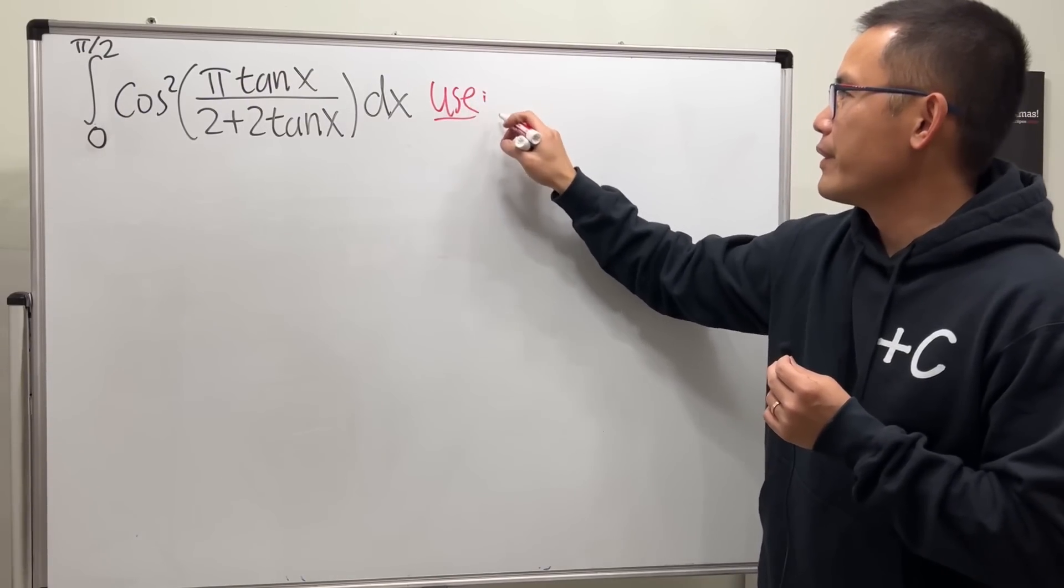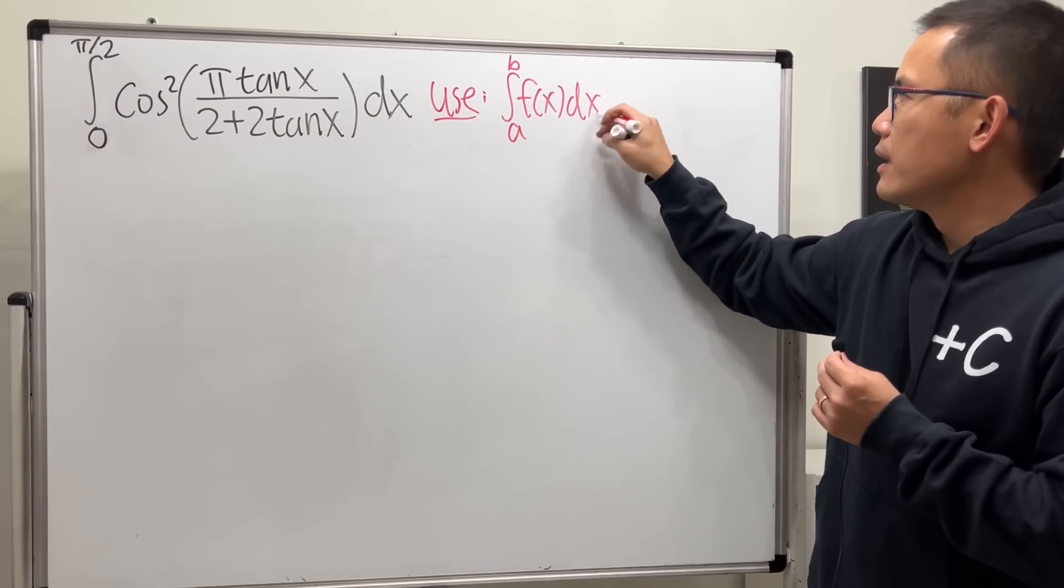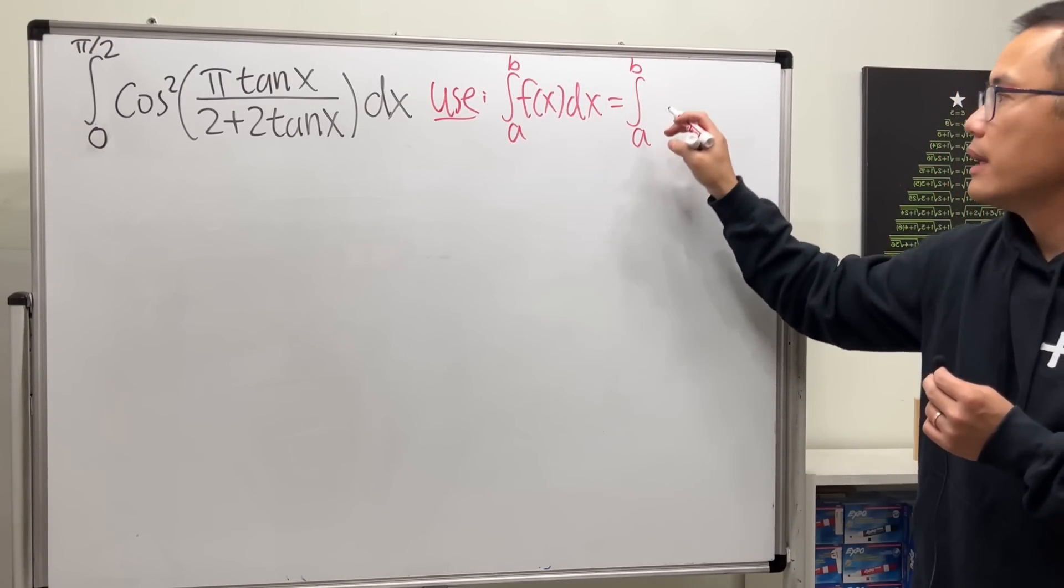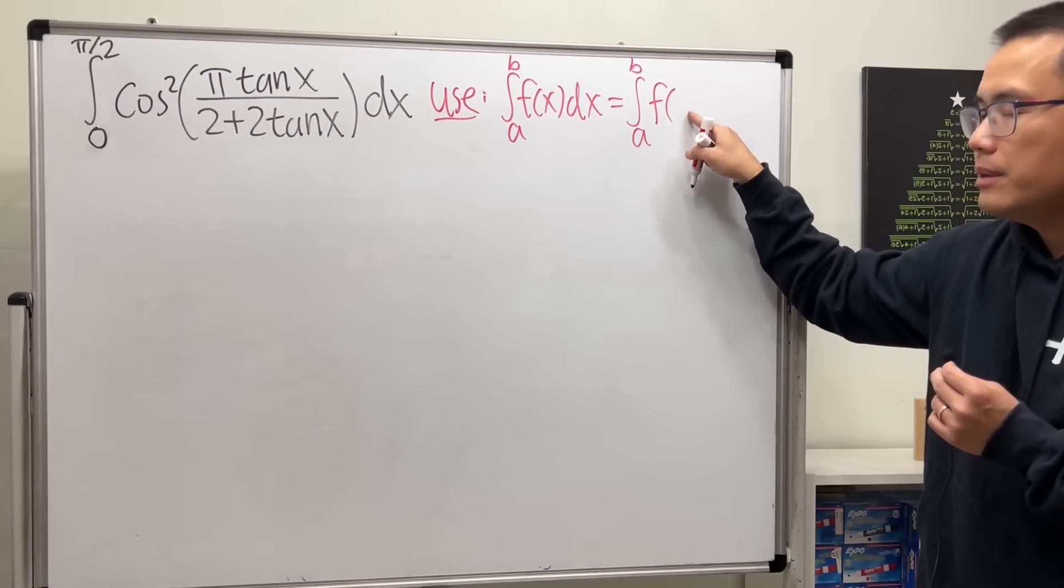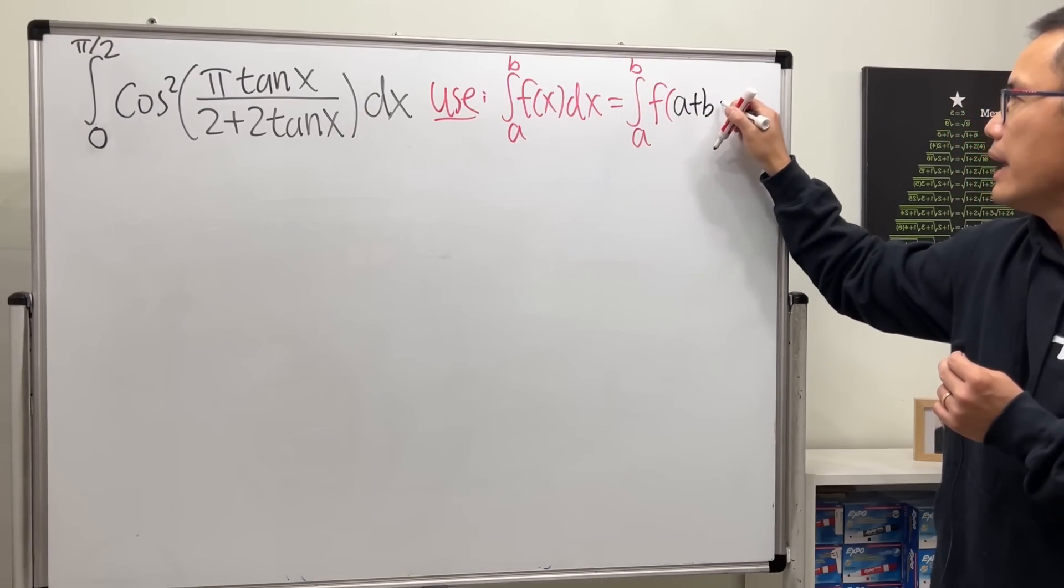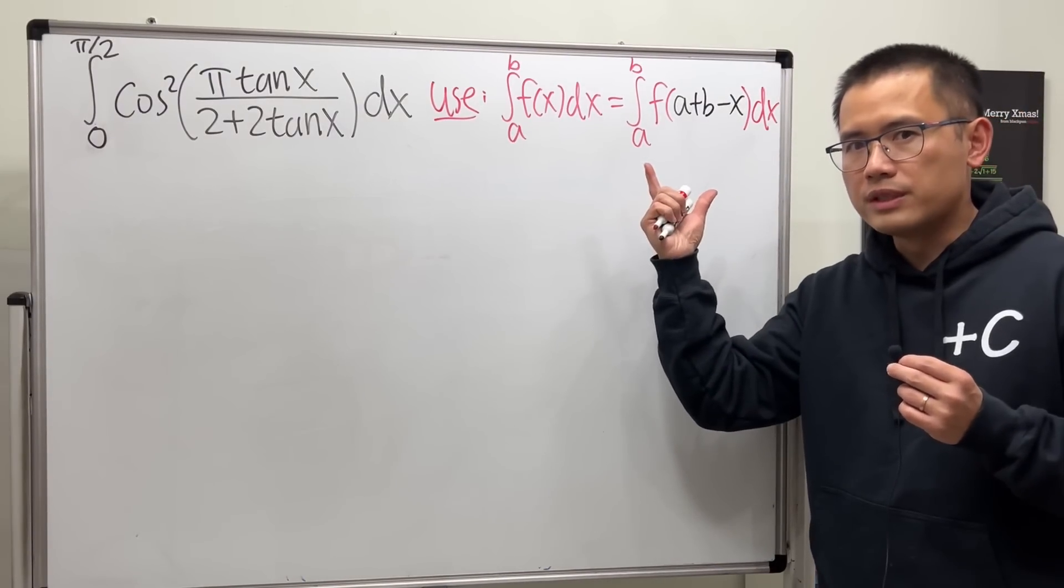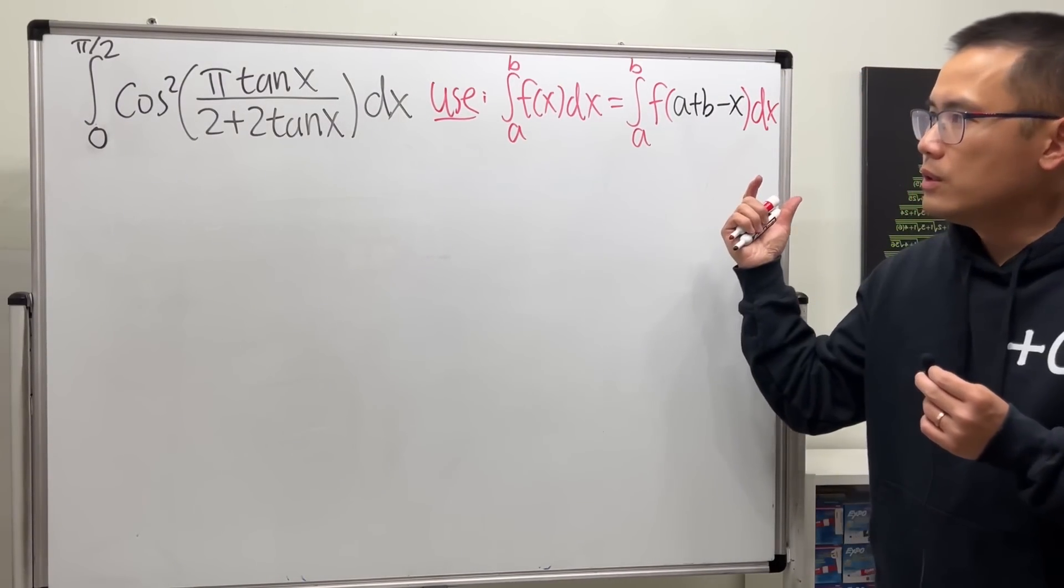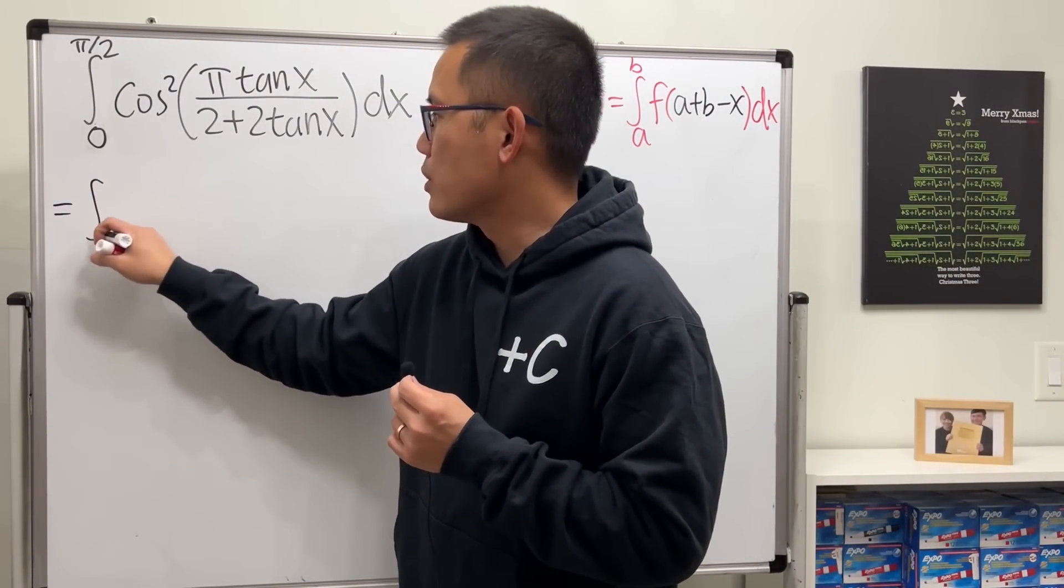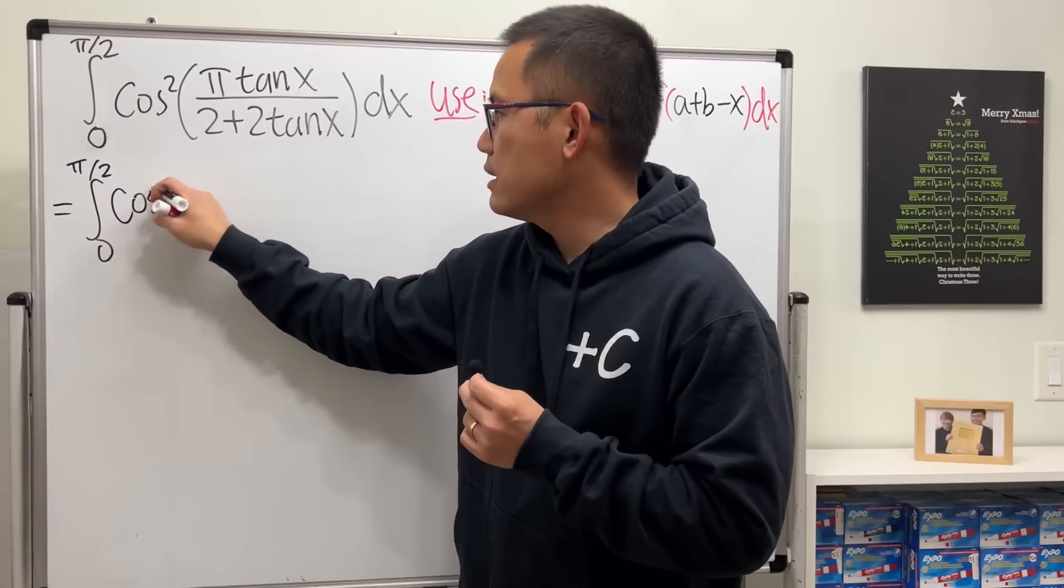Let me write it down here for you guys. When we have an integral going from a to b of a function, this is equal to the integral still going from a to b, but for the input of the function, we can add the a and b together, and then minus x. And I actually have a proof for this video. I will put that in the description for you guys. Let's just apply this identity and see what we can get. So this becomes the integral going from 0 to pi over 2.